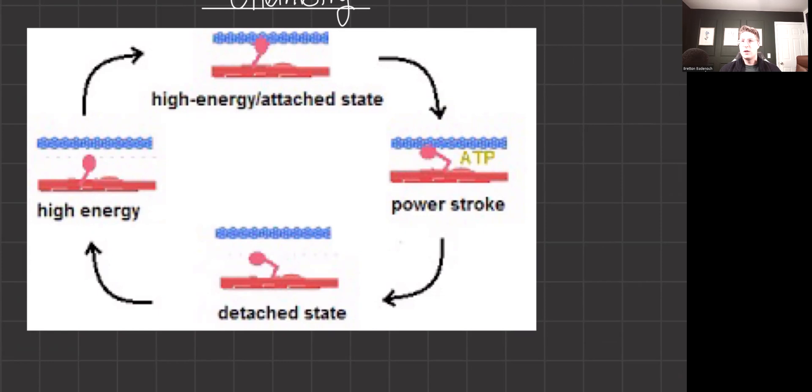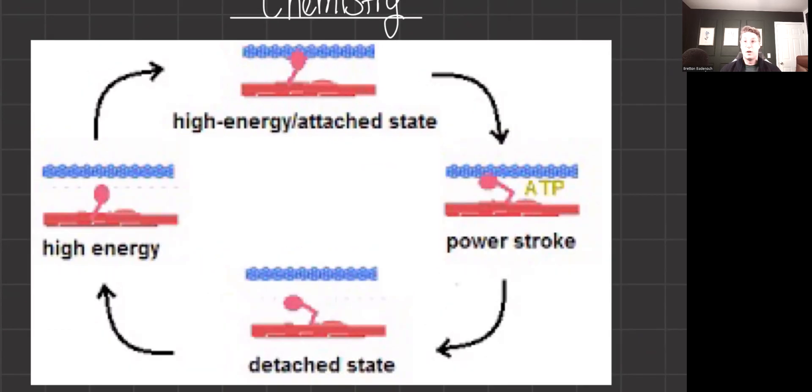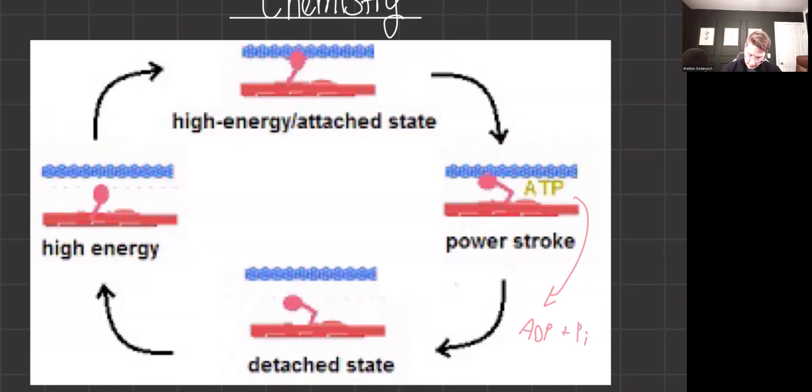Once the binding sites are exposed, the myosin heads, energized by ATP hydrolysis, will attach to actin and form cross bridges. Just a fancy word to say they're binding. The hydrolysis of ATP to ADP and inorganic phosphate will initiate the power stroke. This literally causes the myosin to be flung.